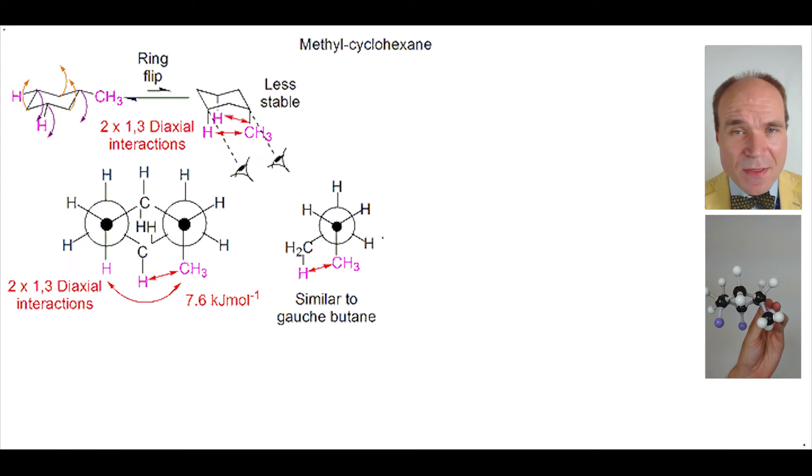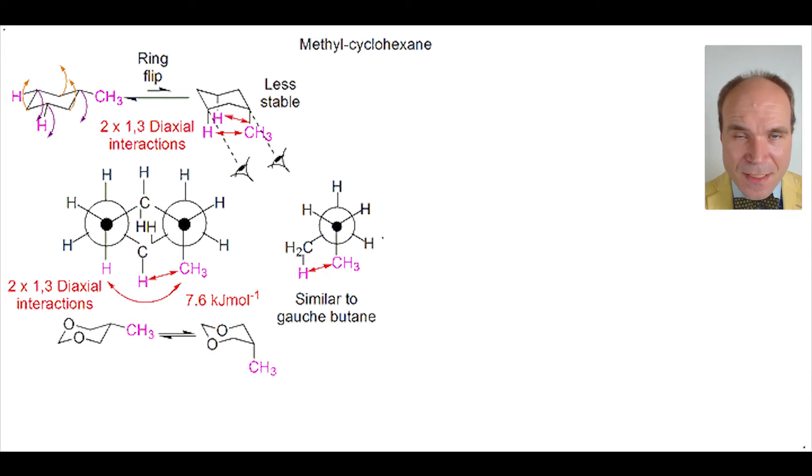Let's see what happens if we replace the critical carbon-hydrogen bonds with an oxygen. Now instead of a hydrogen, you have a lone pair, which is much, much smaller. So here, we still have an axial methyl group in a six-membered ring. But unusually, it doesn't matter because we don't have 1,3-diaxial interactions, even though the methyl group is axial.